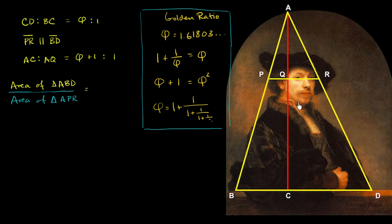We can construct a triangle — these triangles aren't part of his original painting, we superimpose them. If you put the base of a triangle right where his arm is resting, and have the two sides of the triangle outline his arms and shoulders, meeting at the tip at the top of the arch, you construct triangle ABD. Then if you go to his eyes — and human eyes are what we naturally look at in a face — and draw a line connecting the eyes that's parallel to BD, we call that segment PR.